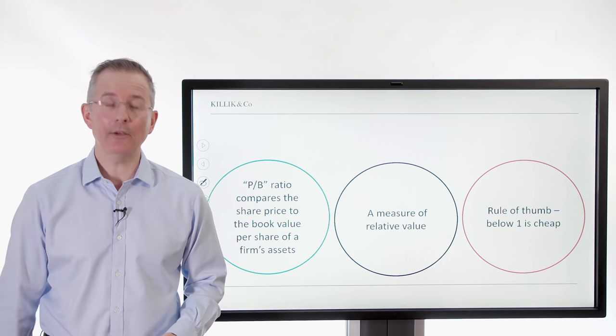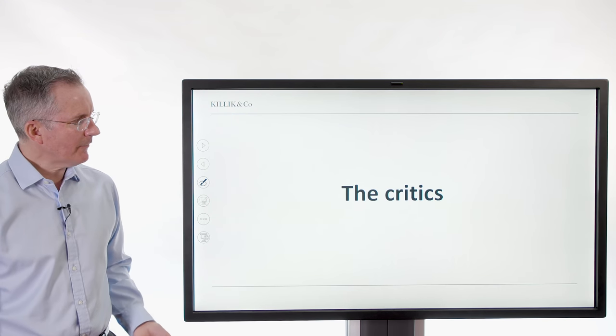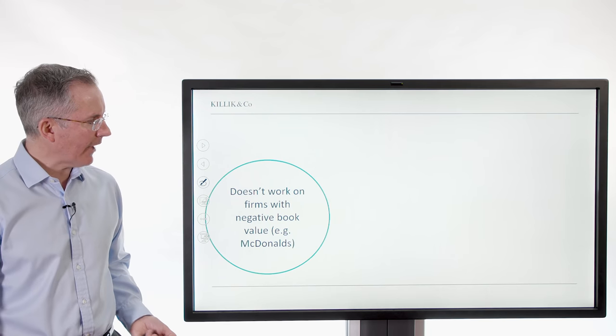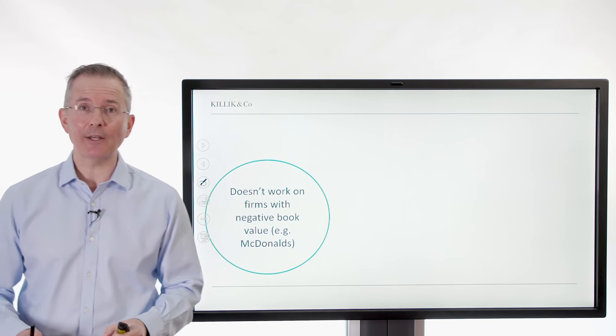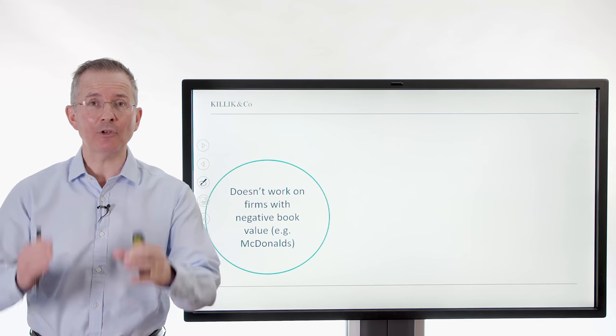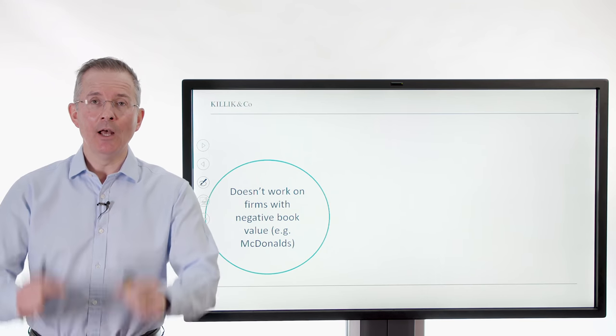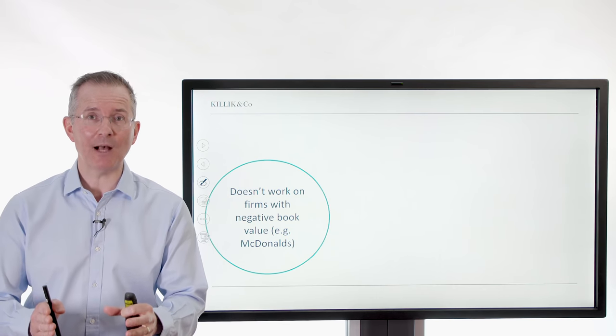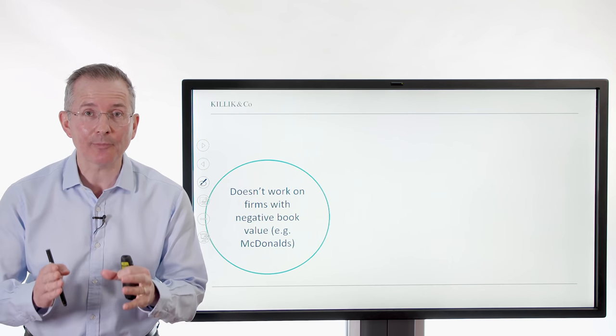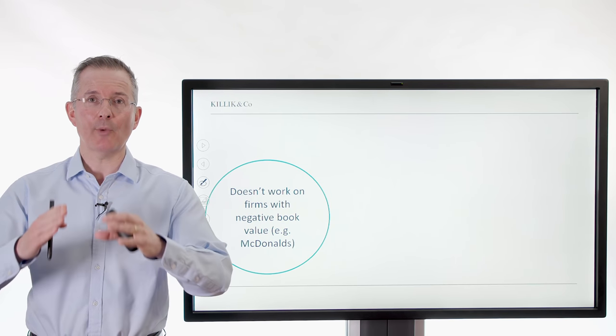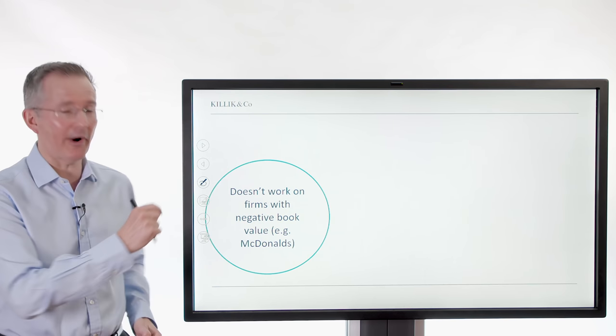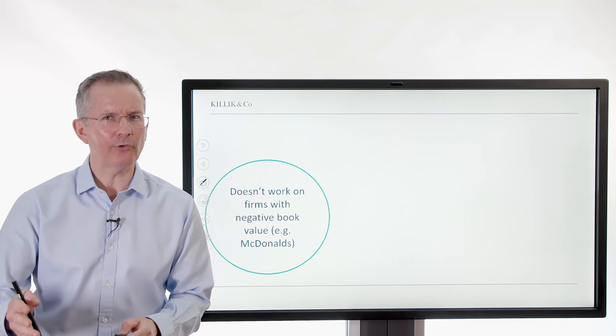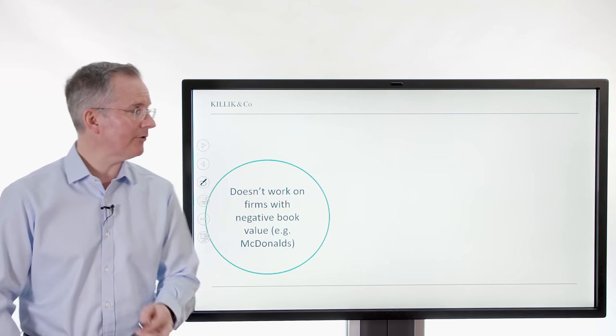Now then, the critics are saying what? Well, they're basically wading in and saying this doesn't work on firms with negative book values. There's a technical problem there right away and there are some quite big ones out there. McDonald's has a balance sheet with a negative overall book value. That doesn't mean McDonald's is about to go bust, far from it. It's just a function of the way its cash flows work and the way it's structured. But it means the price to book ratio is largely useless if you're trying to make a decision about is McDonald's cheap or expensive.